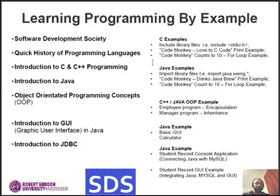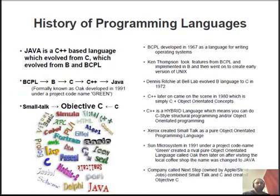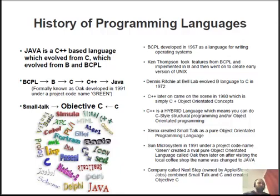Ok, so let's make a start with the history of programming languages. Java is a C++ based language, and C++ evolved from C, which evolved from B. I'm not going to go back to A, but that evolved from a language which initially started in 1967 called BCPL, which was written to create operating systems in the early days.